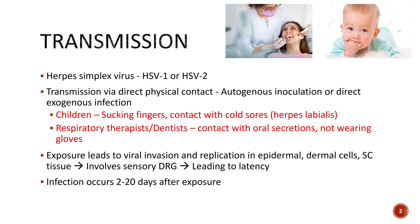Transmission can occur by autogenous inoculation, which means the patient comes in contact with a lesion in another part of their own body — for example, if they have oral herpes or genital herpes. Or it could be via direct exogenous infection, where they come into contact with lesions on another person who is already infected with HSV.